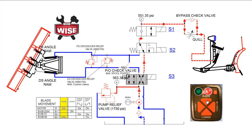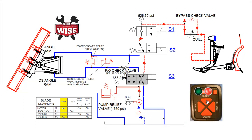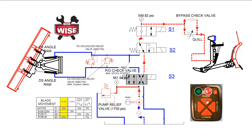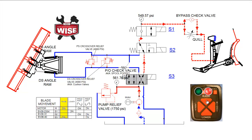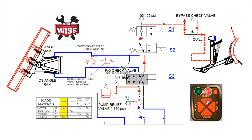Hydraulic fluid then flows through the shifted S3 cartridge valve, the unshifted S2 and S1 cartridge valves, the bypass check valve, to the base of the lift ram, raising the plow. When the plow is fully raised, pressure will build to the pump relief setting, then return directly to tank.